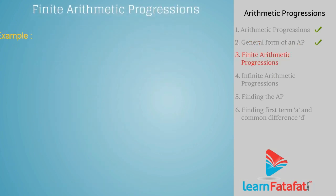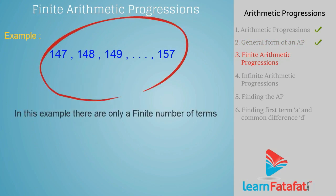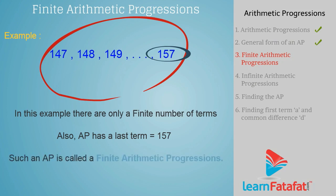Finite arithmetic progressions. Consider an example. In this example, there are only a finite number of terms. Also, the AP has a last term. Such an AP is called a finite arithmetic progression.